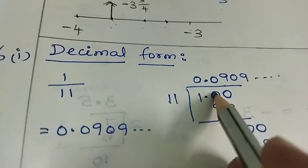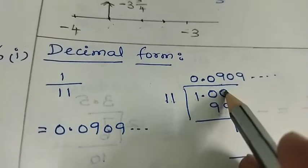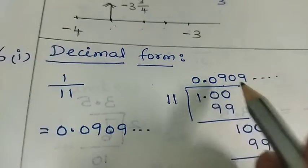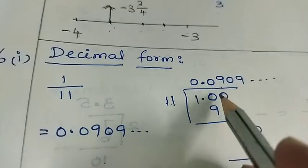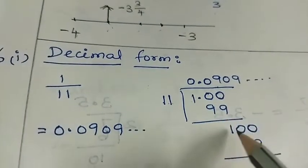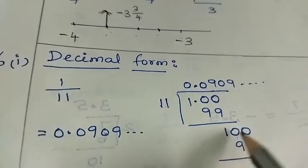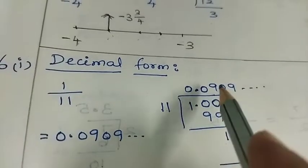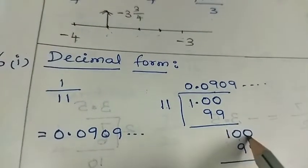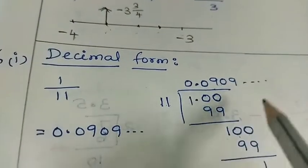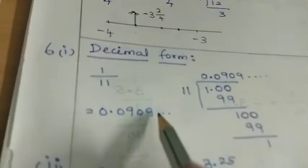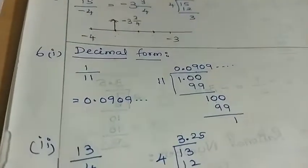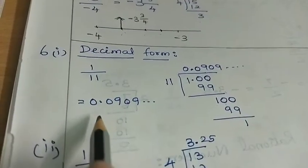One zero, divide. We have to put another zero, another zero, here we have to put another zero, here we have to put another zero. 11 nines are 99, one balance — that is the process. One zero, divide. We have to put another zero, here we have to put another zero, here we have to put another zero, here we have to put another zero.